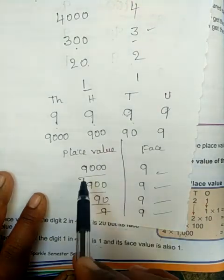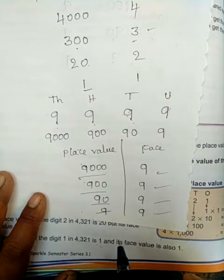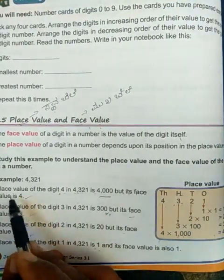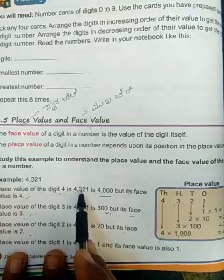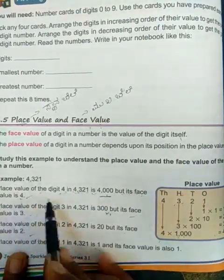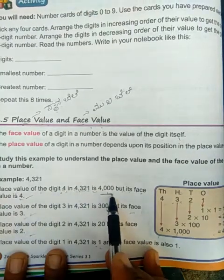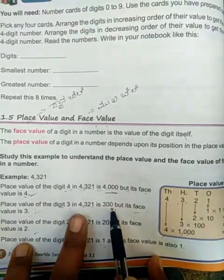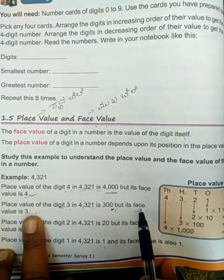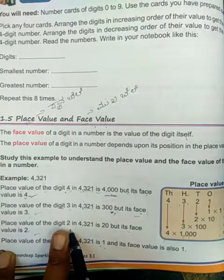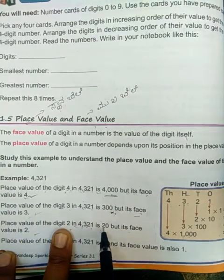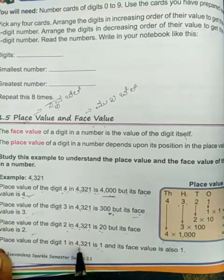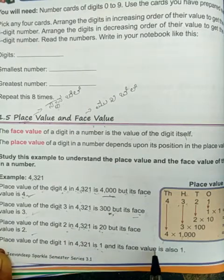This is the differentiation between place value and face value. The place value of the digit 4 in 4,321 is 4000, but its face value is 4. The place value of 3 in 4,321 is 300 because 3 is in the hundreds place, but its face value is 3. The place value of 2 in 4,321 is 20, but its face value is 2. The place value of 1 in 4,321 is 1, and its face value is also 1.